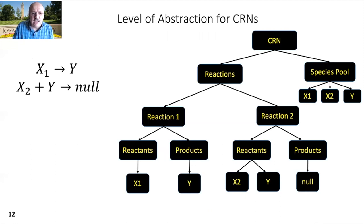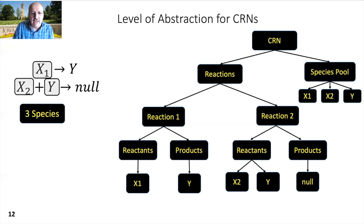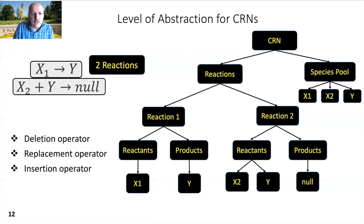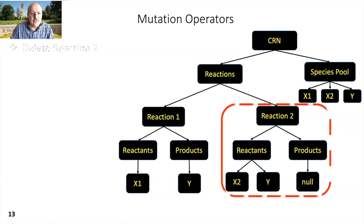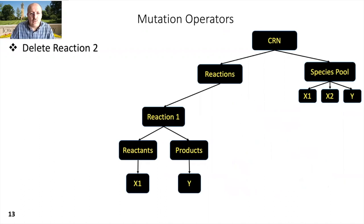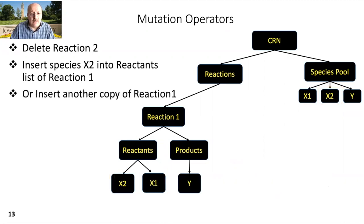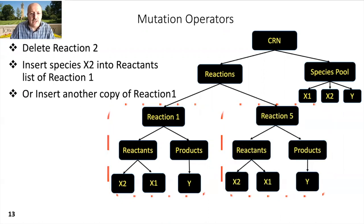CRN repair uses AST-based mutation using species and reaction level granularity. The following CRN has three species and two reactions, and CRN repair can apply mutations on any species and/or reactions. It uses three standard mutation operators: deletion, replacement, and insertion. For example, if the deletion mutation operator is applied to the second reaction, that reaction will be removed with all its components. Or another mutation operator may insert a copy of X2 into the reactants list of reaction one, and another may insert a copy of reaction one into the CRN.